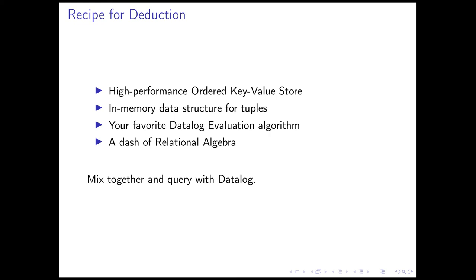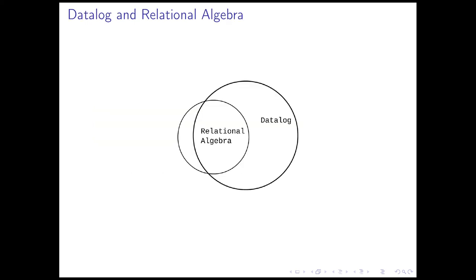The only thing stopping you from implementing your own Datalog engine might just be a bit of motivation. Let us try and get at that as well, and have a look at the relationship between relational algebra and Datalog. The main difference between Datalog and relational algebra is that Datalog is capable of computing recursive queries. This is what we use to compute the path predicate in Datalog — this transitive closure. In relational algebra, you are not able to express something like this. There might be extensions to SQL which allow you to do these things, but in general it is not possible to express this in relational algebra.